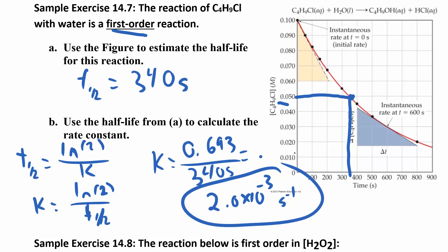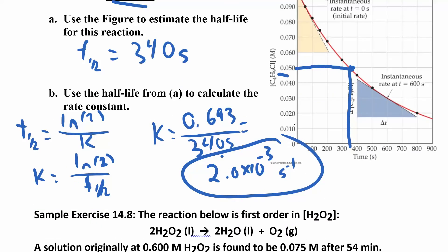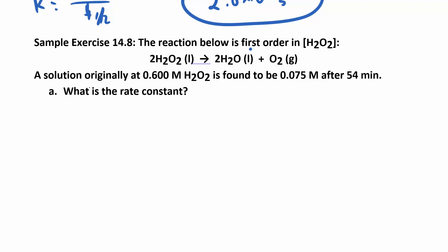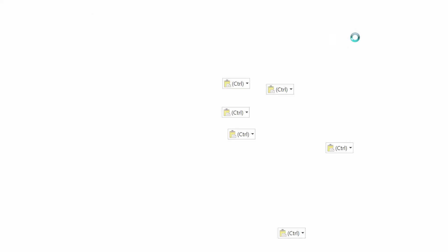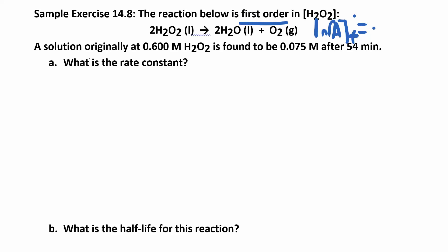Sometimes a problem gives you k and asks for half-life; sometimes it gives half-life and asks for k. In this next problem, the reaction is first order. A solution originally at 0.6 M hydrogen peroxide is found to be 0.075 M after 54 minutes. We need to find the rate constant. Since it's first order, we use: ln[A] at time t = −kt + ln[A]₀, where [A]₀ = 0.6 M, [A] = 0.075 M, and t = 54 minutes.